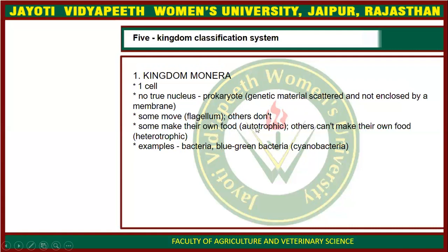Some organisms cannot move due to absence of the flagellum. The members of Kingdom Monera can make their own food, meaning they are autotrophic. And some organisms of the Monera are dependent on other organisms, or on dead animals and raw material, so they are known as heterotrophic. Examples include bacteria and cyanobacteria.